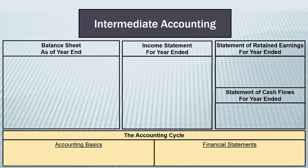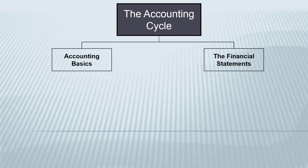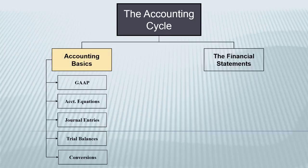We're going to start right down here at the bottom talking about the accounting cycle. Now you've already talked about this in your introductory accounting class, but it's always a good idea to review and get back up to speed with these basics since they really do form the foundation for everything else that we do in accounting. We're going to break the accounting cycle down into two pieces: actual accounting basics and then the financial statements. Under accounting basics, we're going to start with a discussion of GAAP, and that's what these next few segments will be all about.